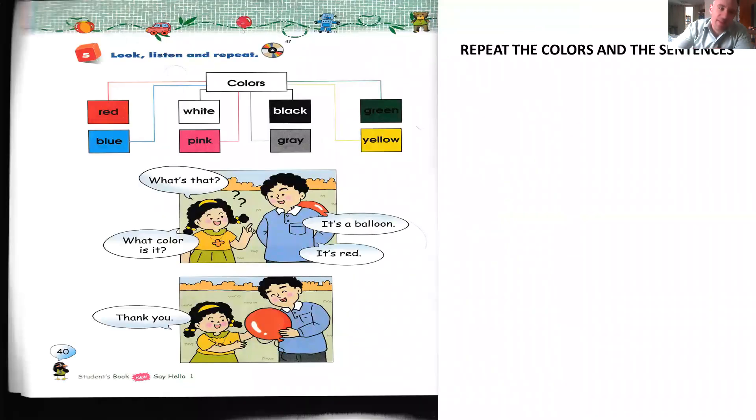Okay, now with the colors, you repeat after me. Red, white, black, green, blue, pink, grey, yellow. What's that? It's a balloon. What color is it? It's red. Thank you.